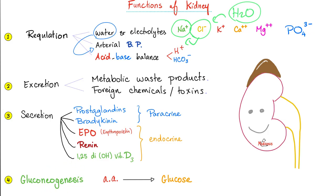The kidney also has a function in gluconeogenesis — making glucose from new, non-carbohydrate sources, like from proteins or from some fats.